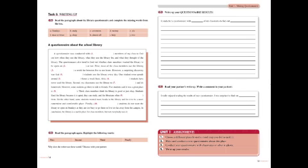In Task 6, students are given a model paragraph about the school library questionnaire. They complete a gap fill with missing words from a box, then highlight key discourse markers such as first, second, third, and finally. They then look at their own questionnaire results and write up a similar paragraph, before passing their book to a partner who reads it and comments on what they were surprised to find out.